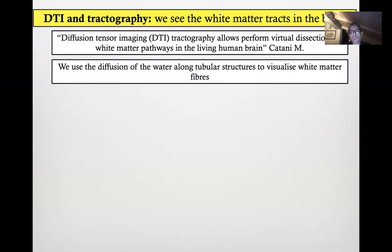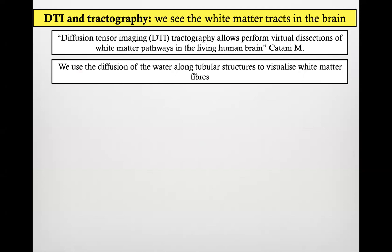DTI and tractography: we see the white matter tracts in the brain, and basically what we have is a virtual dissection of white matter pathways in the living human brain. It's a diffusion technique, and we use the direction of the diffusion of water to pick up which structures are tubular — basically white matter bundles — and which structures are not tubular. This concept is based on something we call anisotropy.